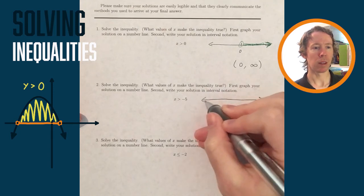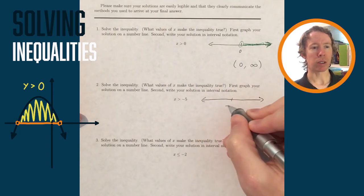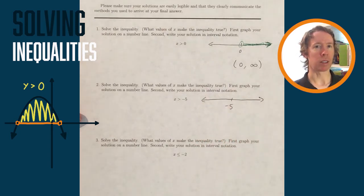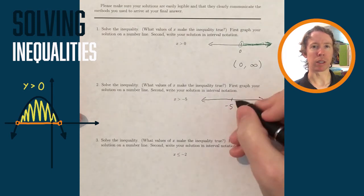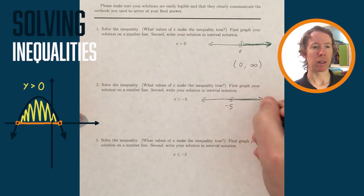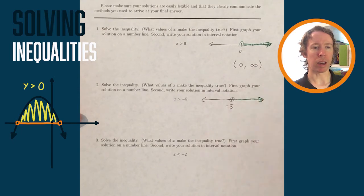For x greater than negative 5, the picture looks identical except for instead of a zero I'm starting at negative 5. I could put that negative 5 on the left or in the middle, it really doesn't matter.